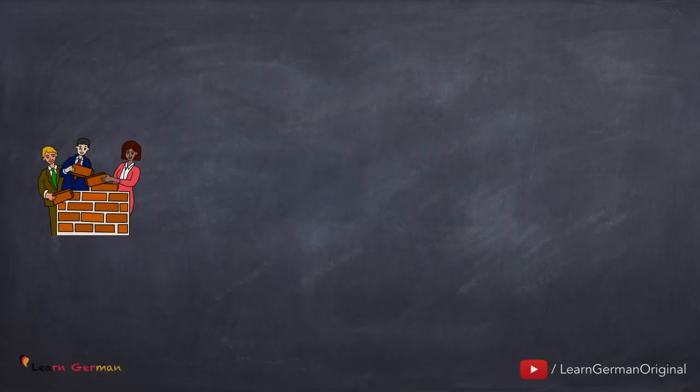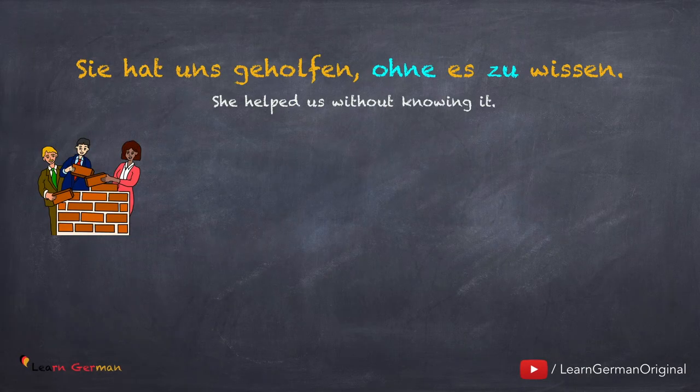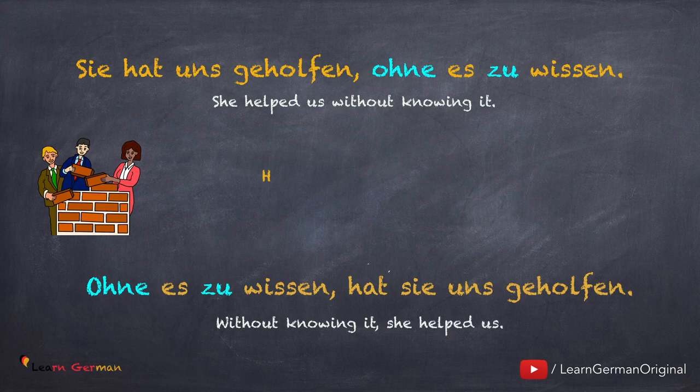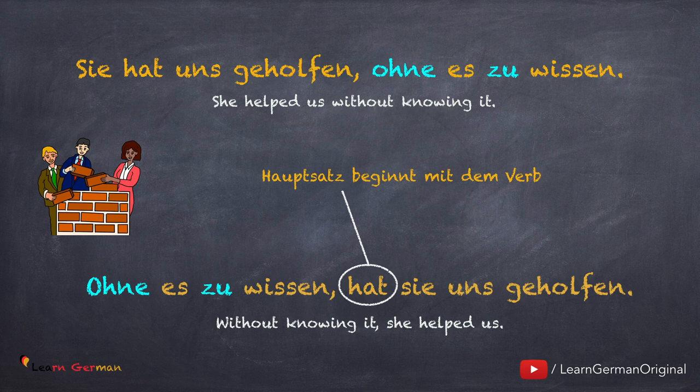Noch ein Beispiel: Sie hat uns geholfen, ohne es zu wissen. Diese Sätze kann man auch so formulieren: Ohne es zu wissen, hat sie uns geholfen. Hier steht der Nebensatz vor dem Hauptsatz. Bitte vergessen Sie nicht, der Hauptsatz beginnt mit dem Verb. You can also begin with the Nebensatz — Nebensätze end with the verb, and in this case the Hauptsatz will begin with the verb.